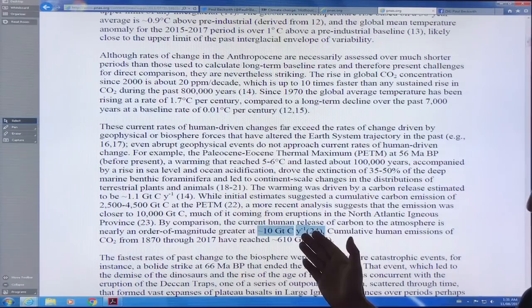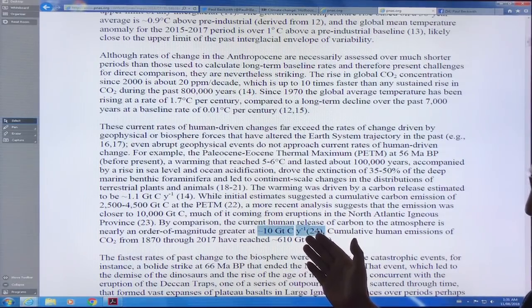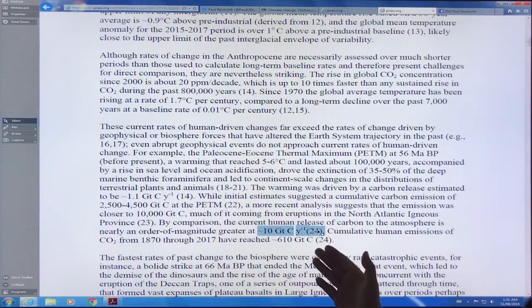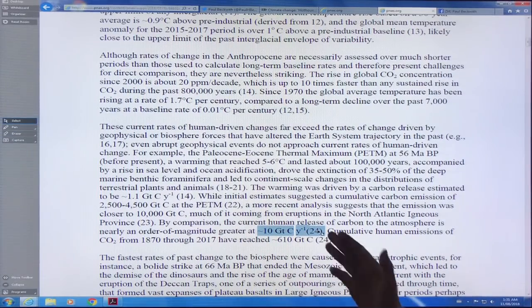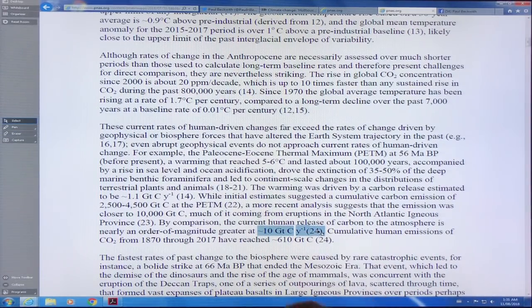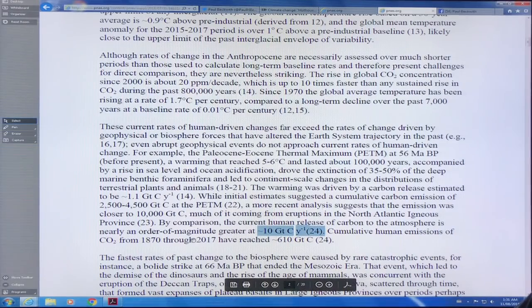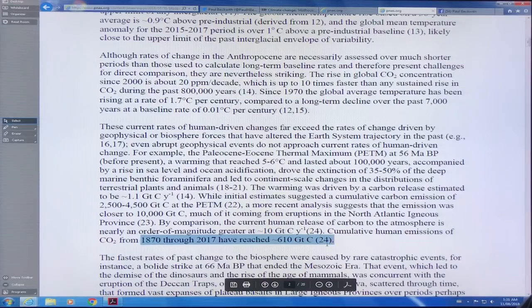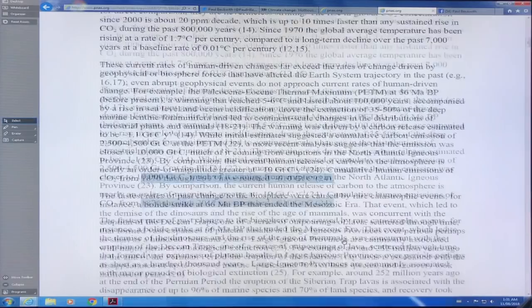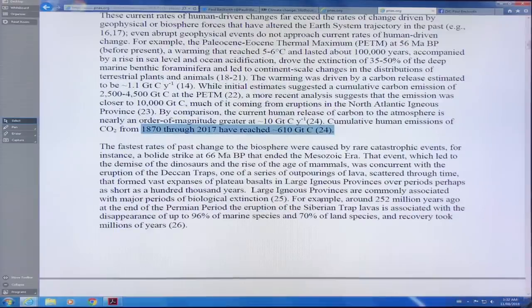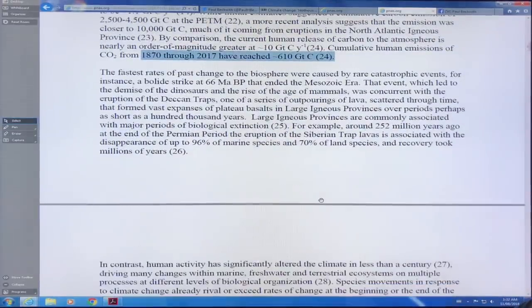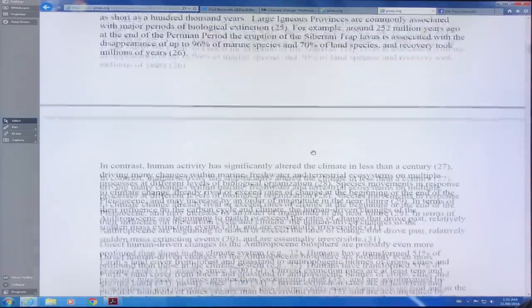If you want to convert that to gigatons of CO2, you multiply it by 3.66. So it's 36, 37 gigatons of CO2 per year. Our cumulative emissions of carbon from 1870 through 2017, we've reached 610 gigatons of carbon. We're changing things extremely rapidly.